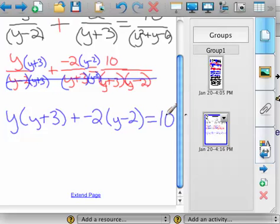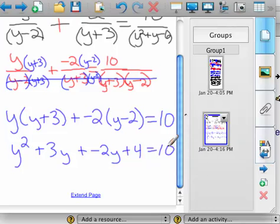At this point now, you can distribute and start simplifying. So we'd have y squared plus 3y plus a negative 2y plus 4 equals 10.